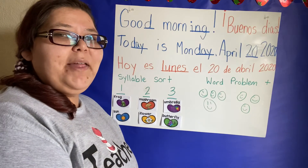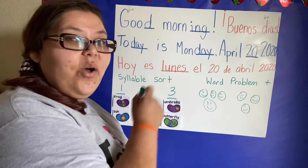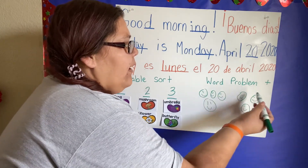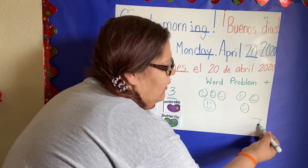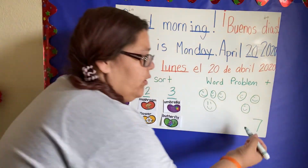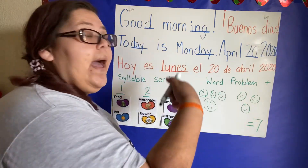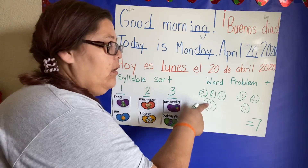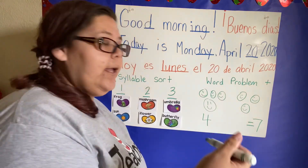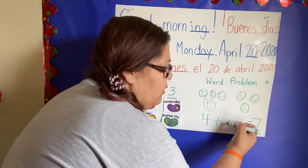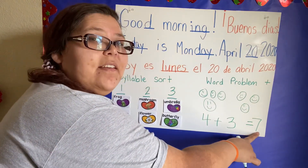Three more came to play. How many kids are at the park playing? We're going to count all of them now — one, two, three, four, five, six, seven. How many kids are at the park? Seven. So there's my answer. But I need my math equation, my number sentence. How many kids were at the park first? Four. Then how many more came? We added three more. So four plus three is seven.